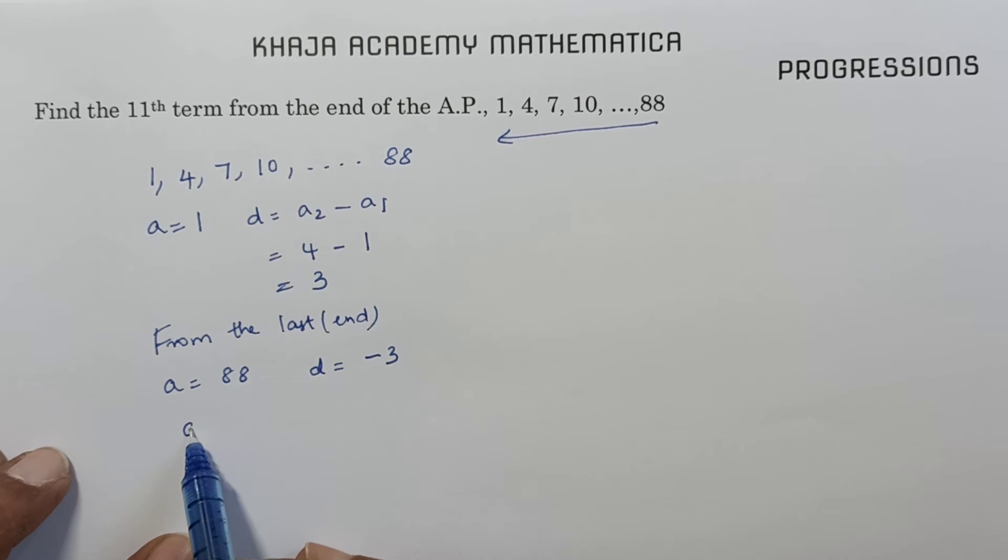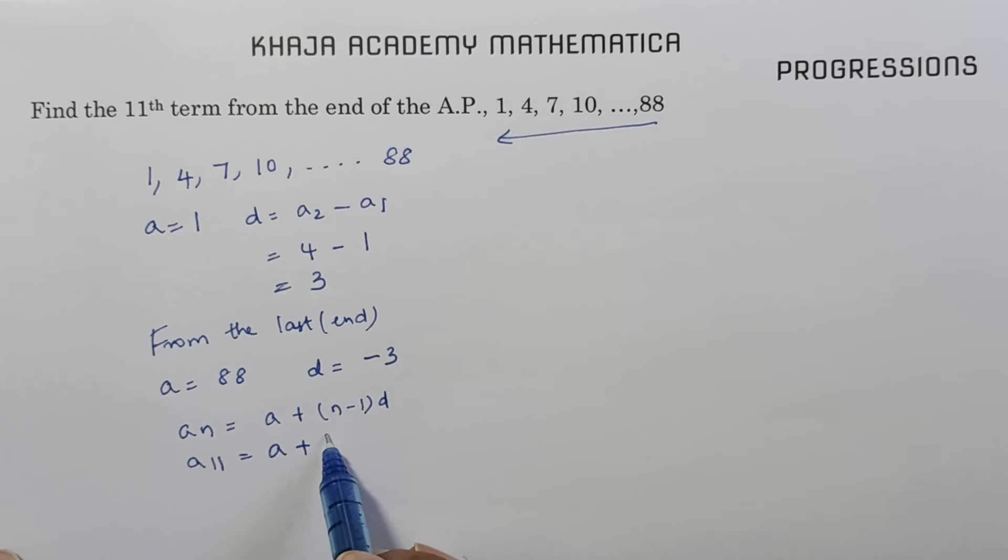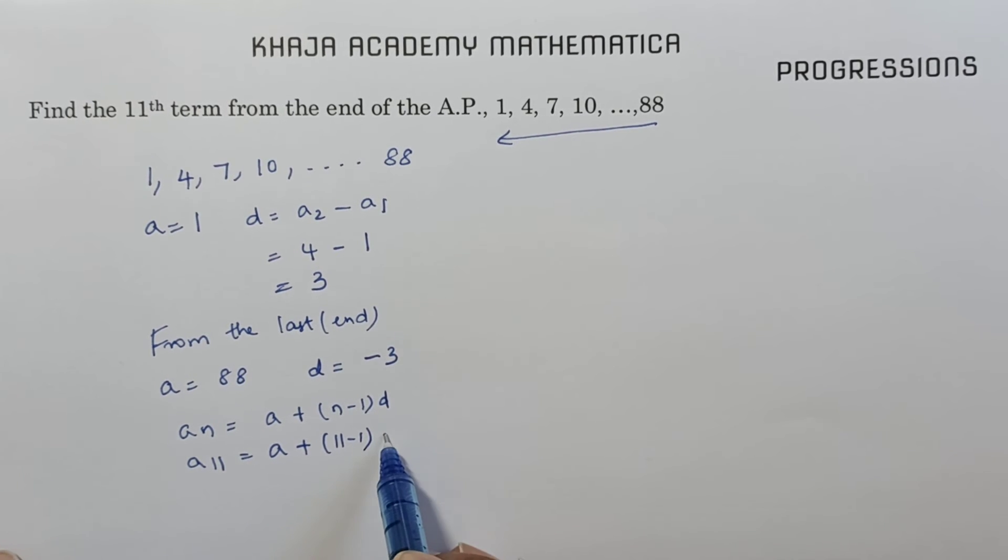We need to find the 11th term. So the AN formula is A plus (N minus 1) times D. And A11 is nothing but A plus (11 minus 1) times D, that is A plus 10D.